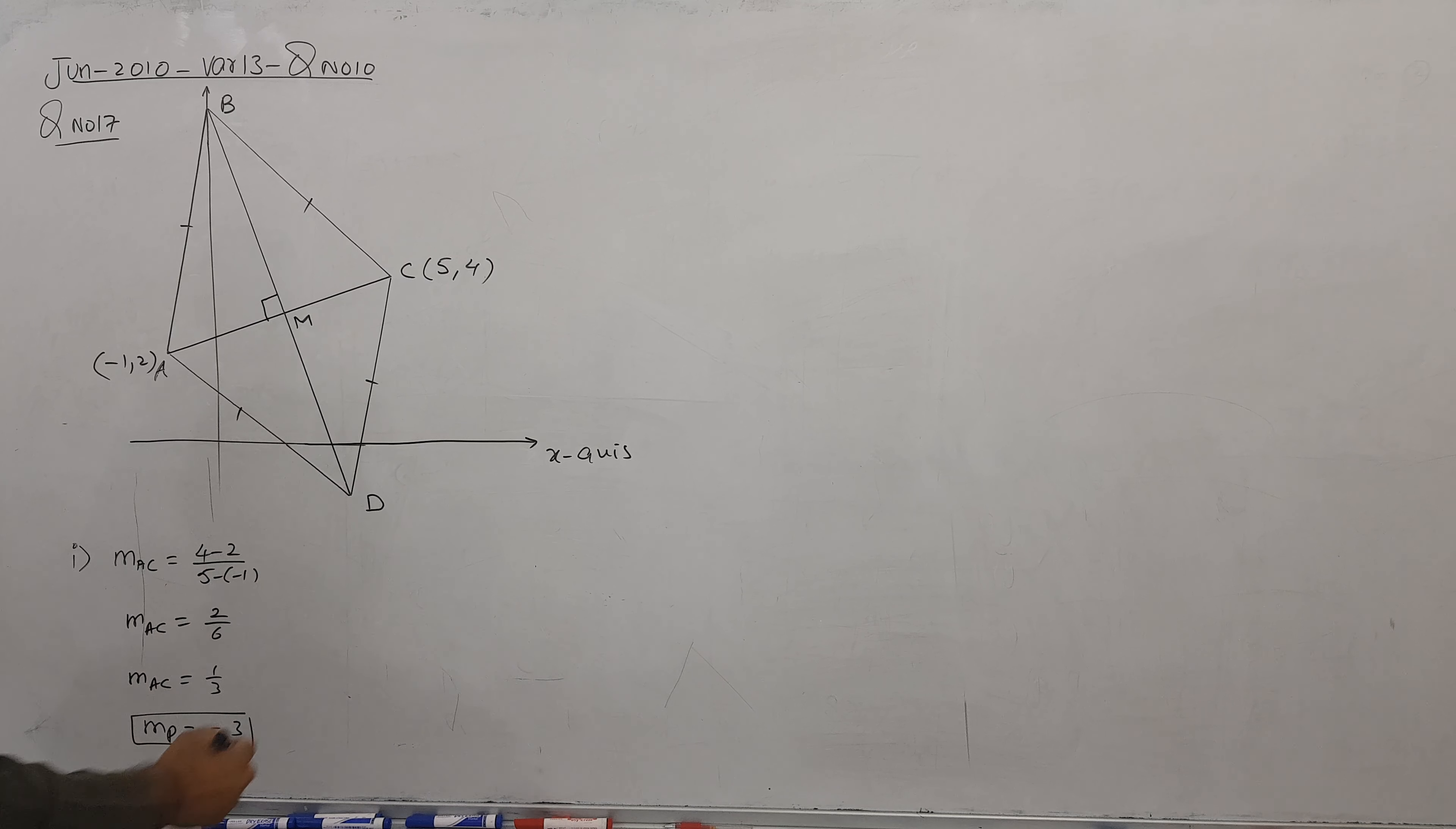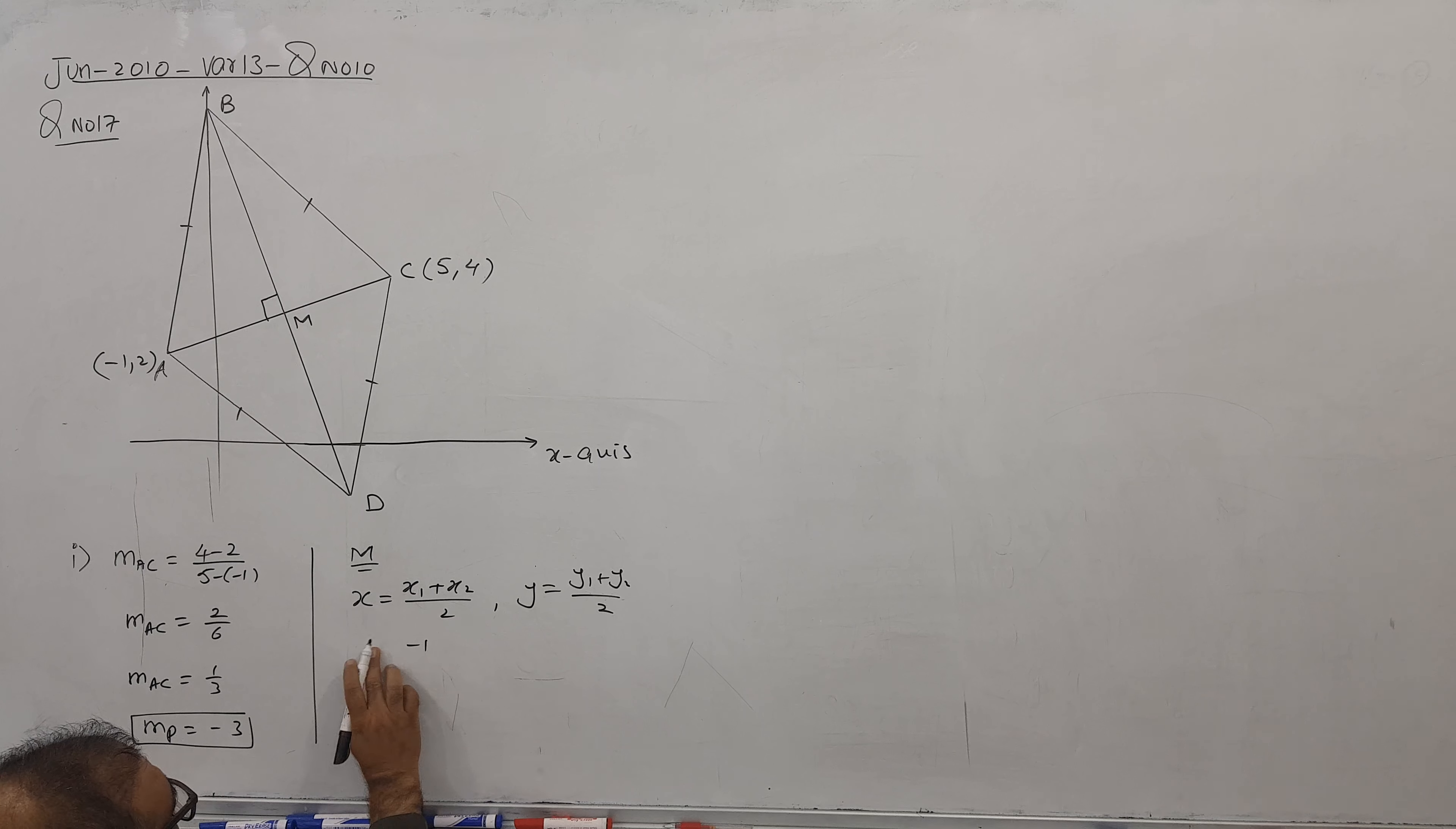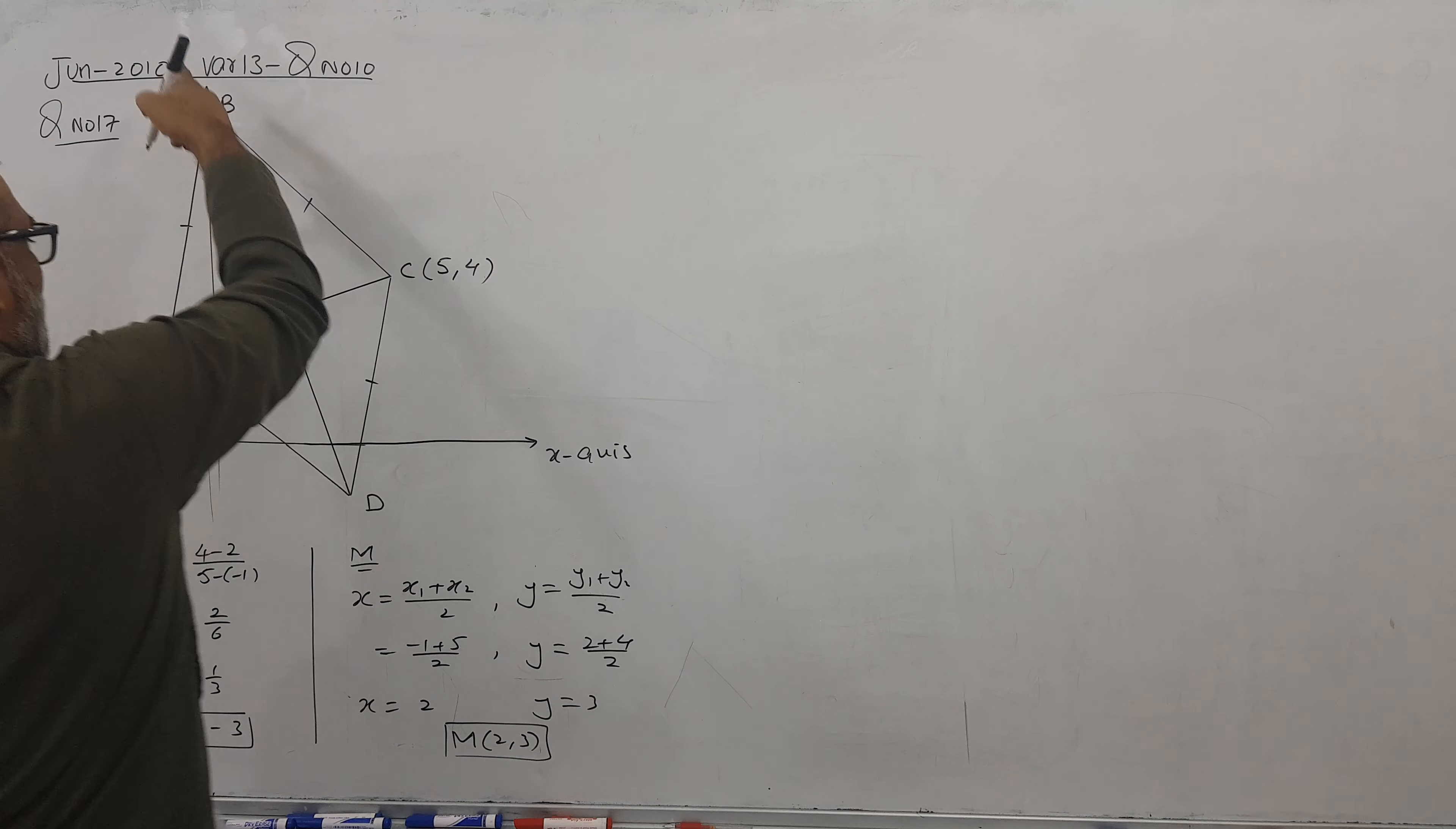Now I'll go for the midpoint formula. Midpoint M coordinates - not a hard job. Find average of two numbers: x1 plus x2 divided by 2, similarly y1 plus y2 divided by 2. x1 is minus 1, x2 is 5, I am getting 2. Similarly y coordinate, 2 plus 4, 6 divided by 2, I got 3. So M coordinate is 2 comma 3.